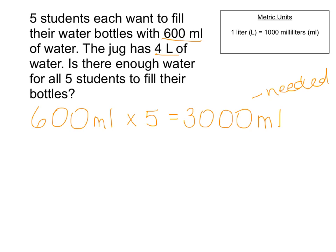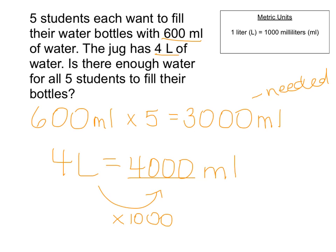Now I have to figure out if four liters is enough. I can't compare four liters to 3,000 milliliters directly, so I need to do some converting. Four liters equals some number of milliliters. To go from liters to milliliters, I'll multiply by 1,000, so four times 1,000 is 4,000 milliliters. Since 4,000 is larger than 3,000, we have plenty of water for all five students, and there will be 1,000 milliliters left over. Yes, there's plenty of water with some left over.